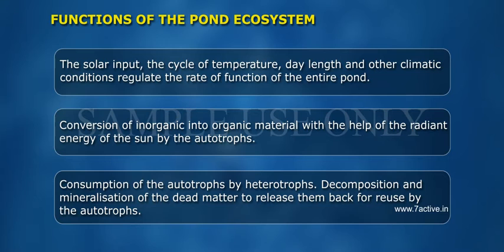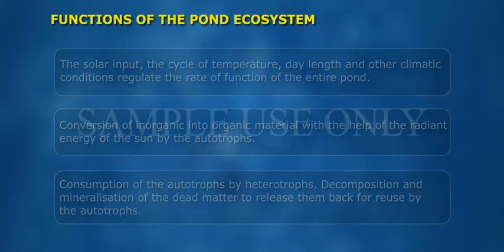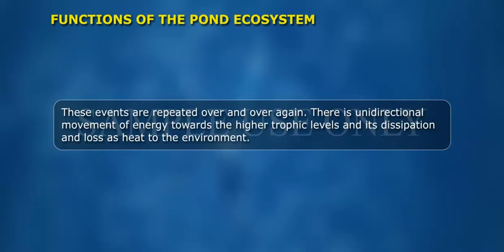Heterotrophs consume the autotrophs. Decomposition and mineralization of dead matter release materials back for reuse by the autotrophs. These events are repeated over and over again, with unidirectional movement of energy towards higher trophic levels and its dissipation and loss as heat to the environment.